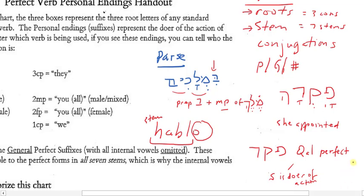Person refers to first, second, or third person. So person is one, two, or three. Gender is masculine, feminine, or common. And number is singular versus plural.